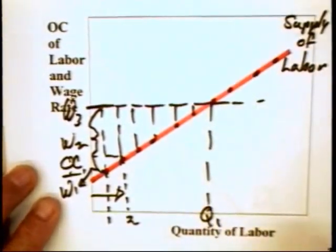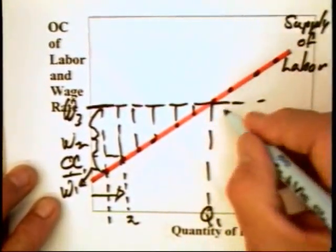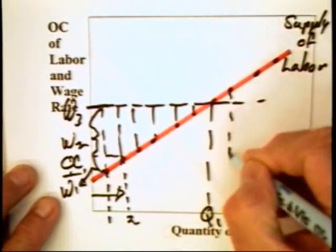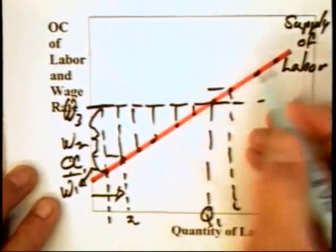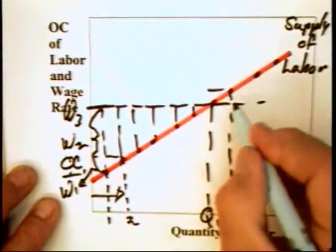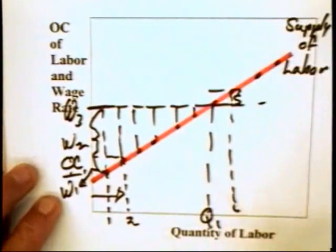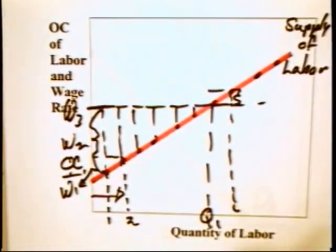At a wage of W3, this worker is not going to come into the market simply because the worker's opportunity cost is up there, the wage is here. There would be effectively a loss in welfare equal to that gap.